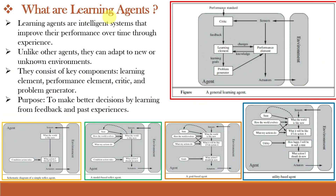So what are Learning Agents? Learning Agents are a special type of intelligent systems that get better over time by learning from experience, just like humans. Unlike simple reflex agents or model based agents, learning agents can adapt when they encounter new or unknown situations. These agents are made of several important parts: a learning element that helps the agent improve, a performance element that makes decisions, a critic that provides feedback, and a problem generator that suggests new actions to explore. All these components work together to help the agent become smarter and more effective.